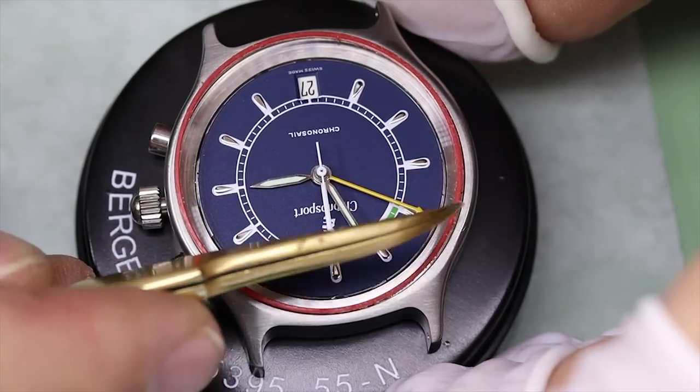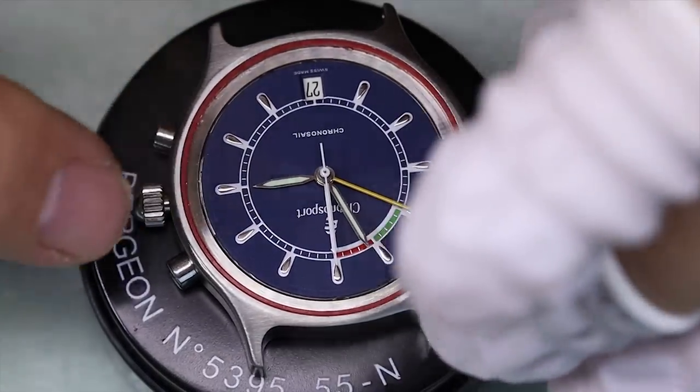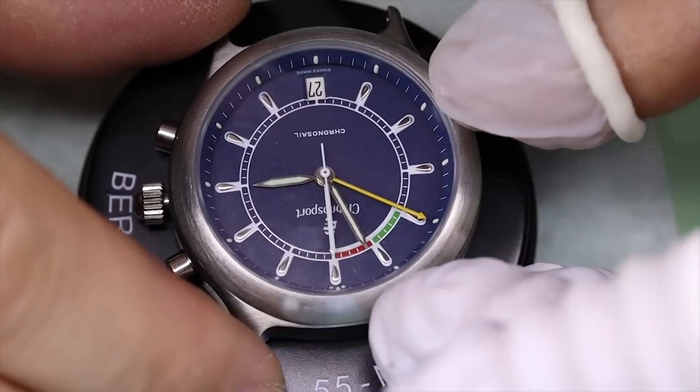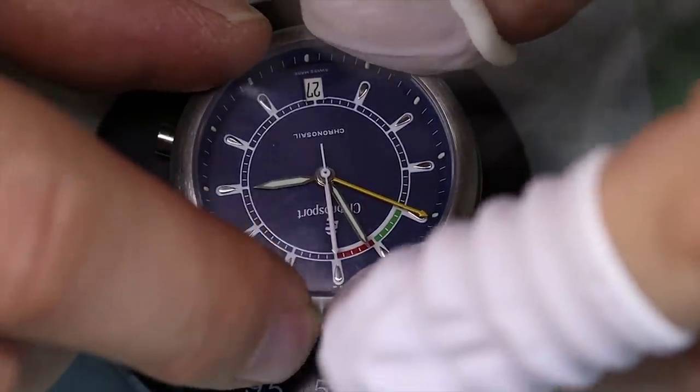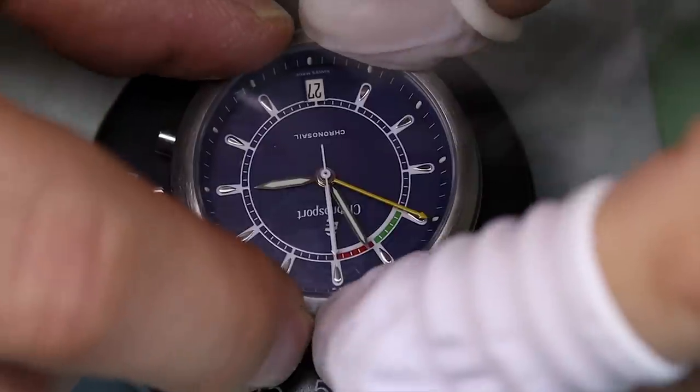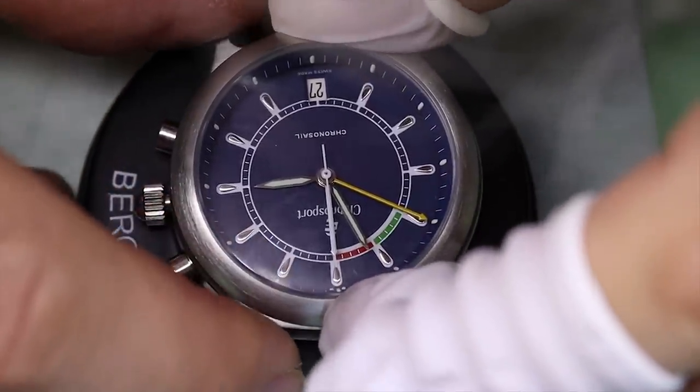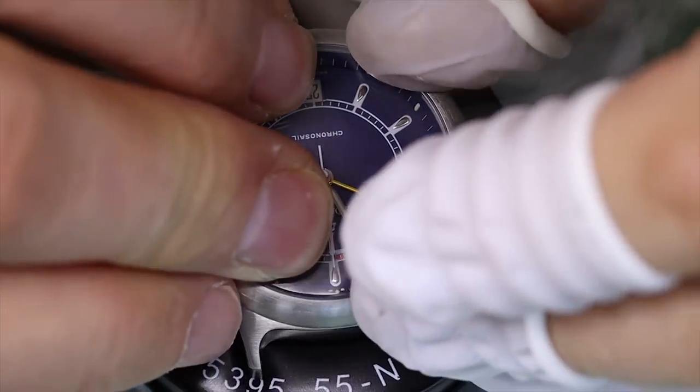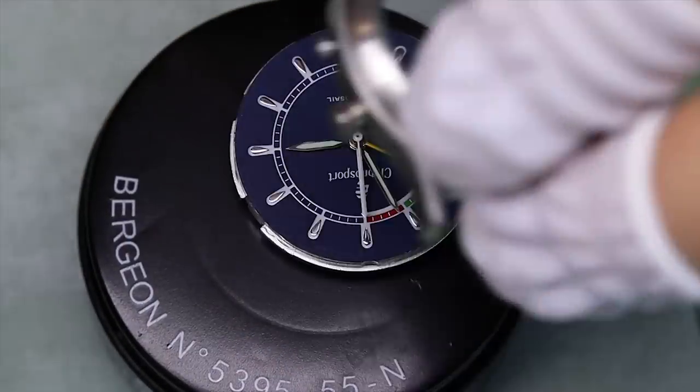One thing we have to do is to make sure that the bezel with the markings for the hour lines up perfectly. So we're going to put the movement in the case and then we can line up the bezel. And when we're confident that it's centered, we're going to press the bezel onto the case again. I'm doing that off camera. There's a lot of things I'm doing off camera.